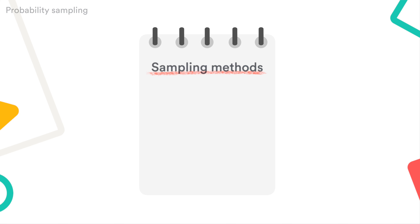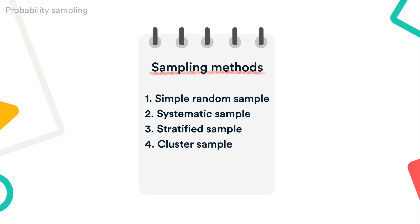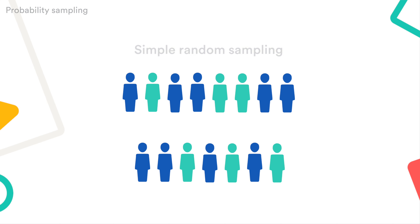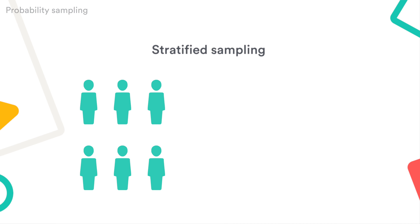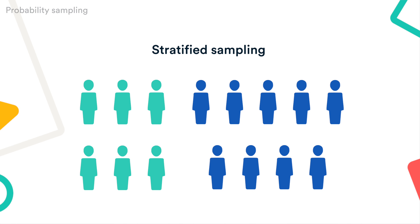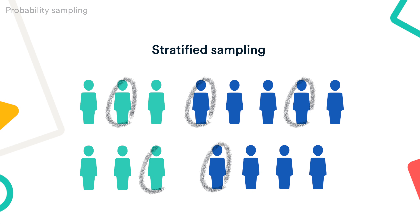Probability sampling helps ensure that your sample is representative and unbiased. With this type of sample, you can use statistics to draw strong conclusions about the whole population. There are various methods of probability sampling. For example, with simple random sampling and systematic sampling, you select a sample completely at random from the whole population. With stratified sampling, you divide the population into subgroups and draw a random sample from each subgroup.